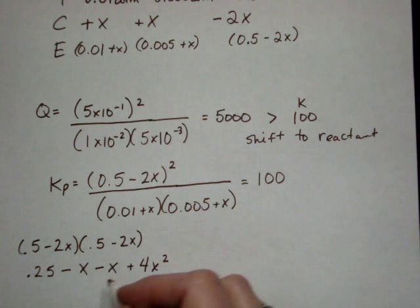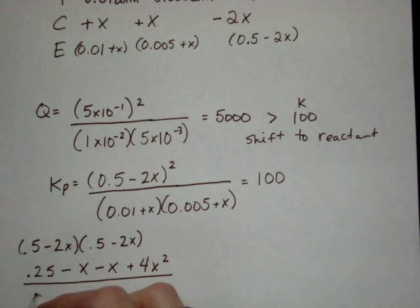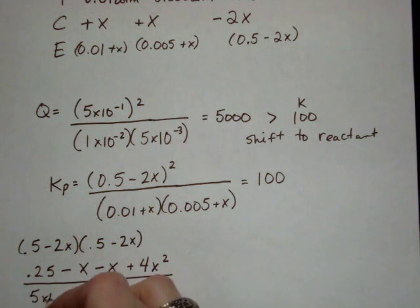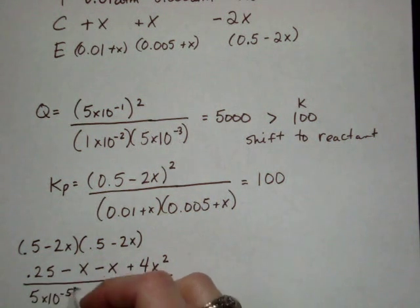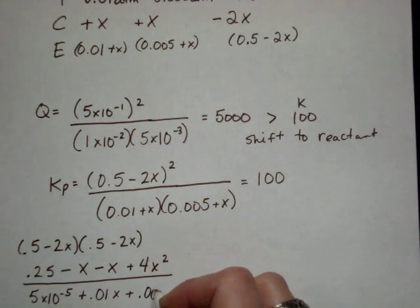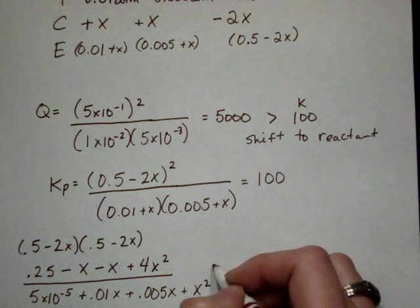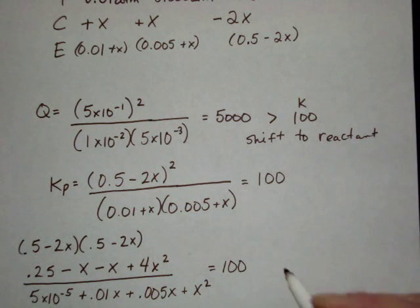Then, on the bottom, that will be 0.01 times 0.005 is 5 times 10 to the negative 5 plus 0.01x plus 0.005x plus x squared. And all that equals 100.